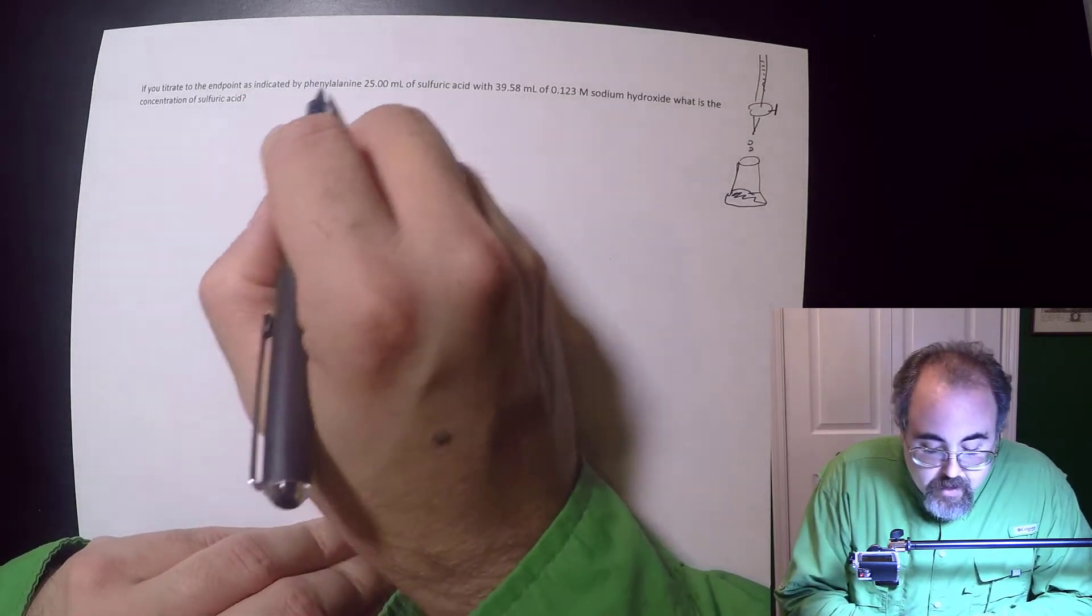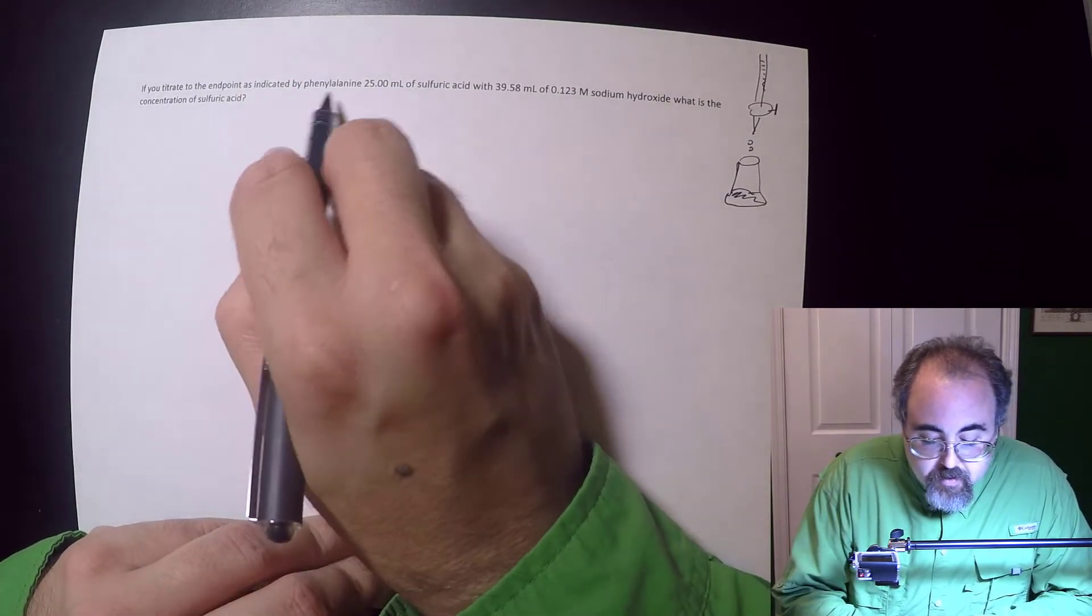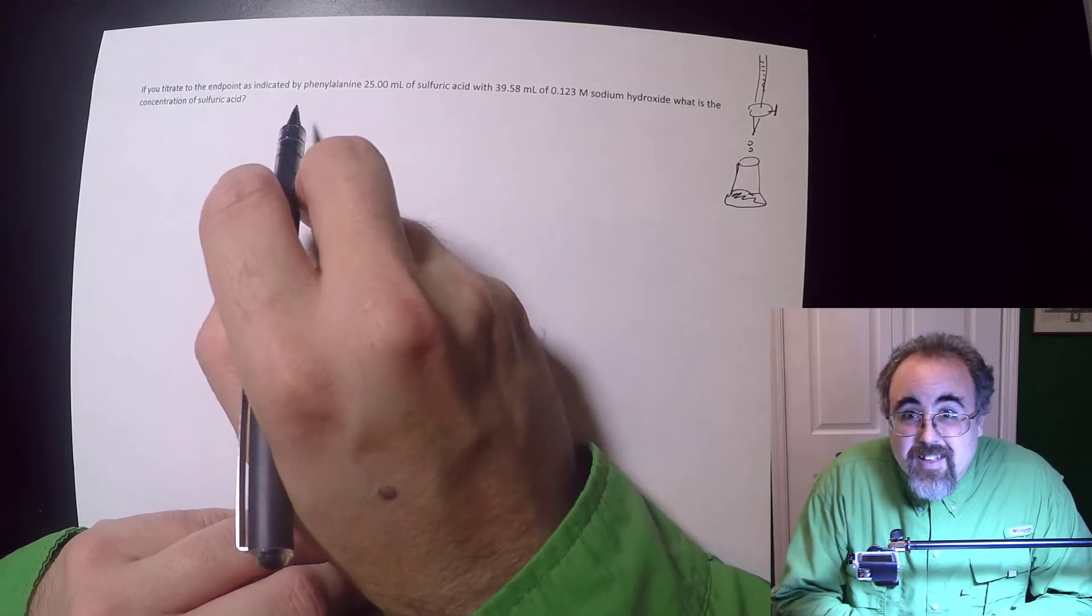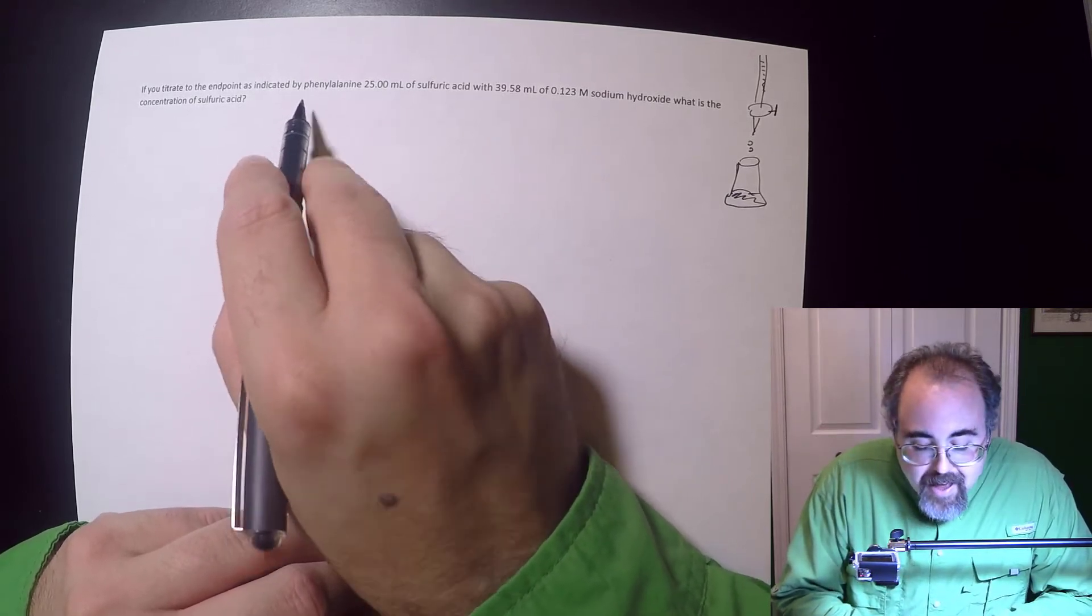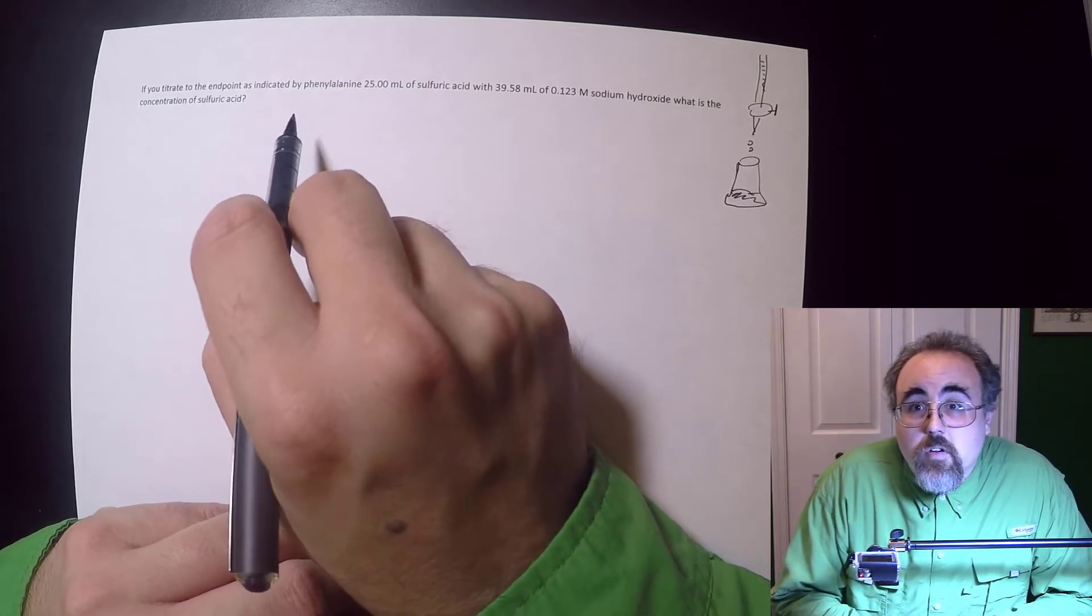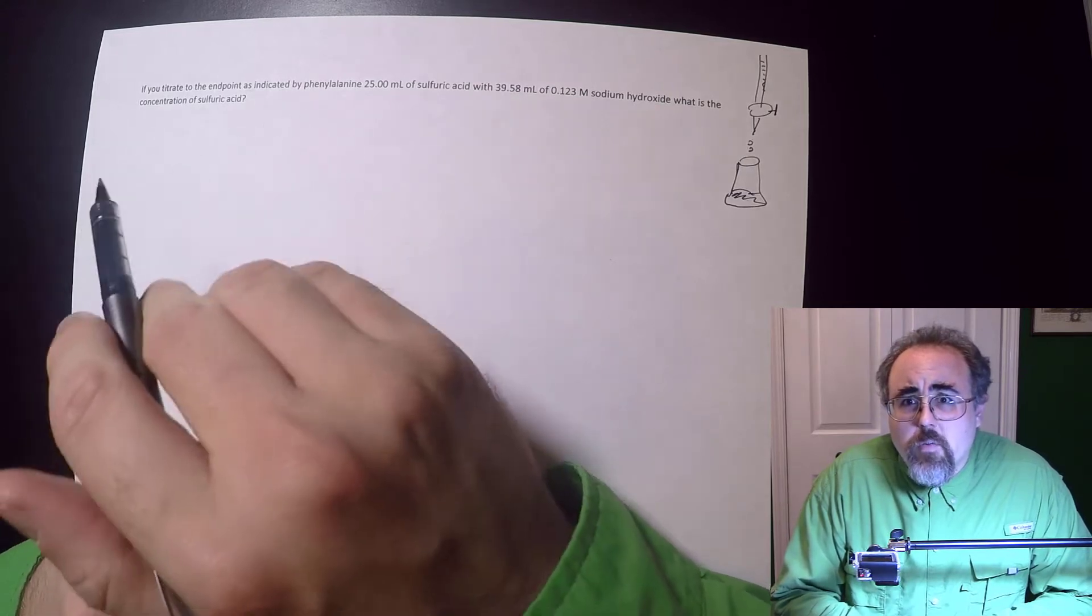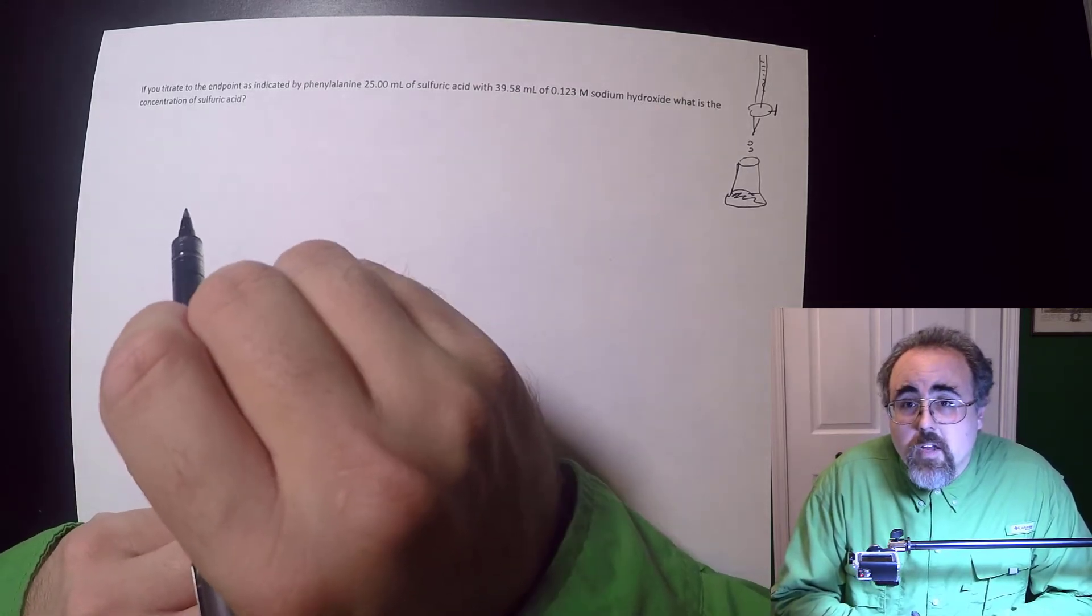We're titrating to the endpoint by phenolphthalein. This is telling me that I'm going to the endpoint. When I'm at that endpoint, that's what we call that stoichiometric ratio. Phenolphthalein is Pepto-Bismol pink. Literally, in the old days, that's why Pepto-Bismol was pink. This turns pink in alkaline solutions and is colorless in acidic solutions.